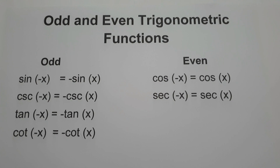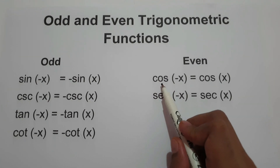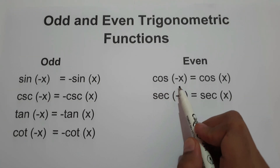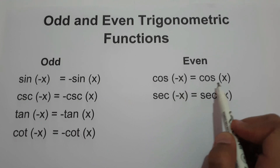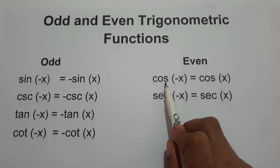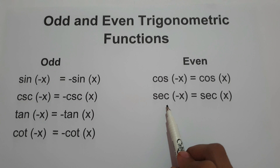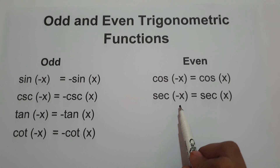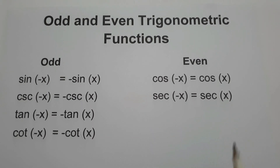What about even functions? The even functions consist of cosine: cosine(-x) = cosine(x). And the reciprocal of cosine is secant: secant(-x) = secant(x).